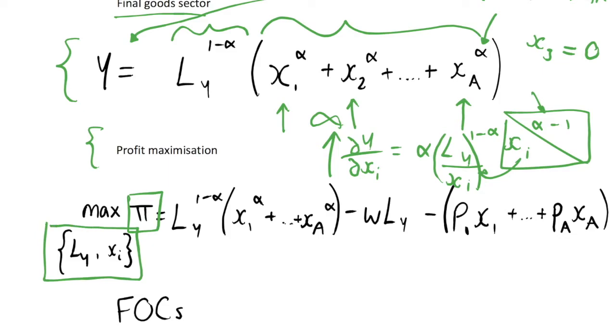So its profits are just given by its output function minus the wage multiplied by the amount of labor it employs, as usual, and then also minus the price of each of these intermediate goods multiplied by the quantity of these intermediate goods that we use.